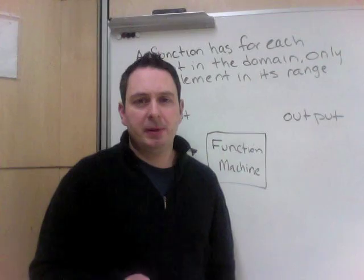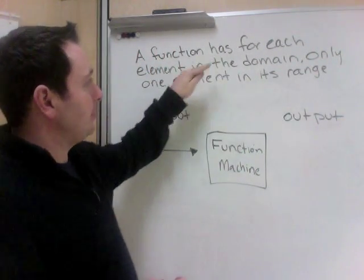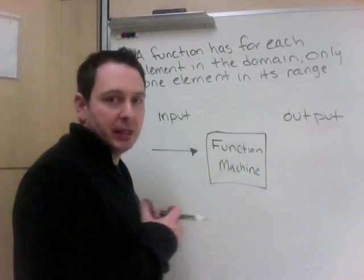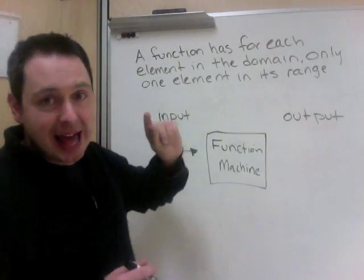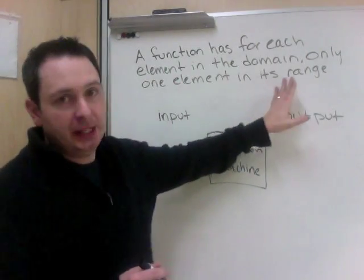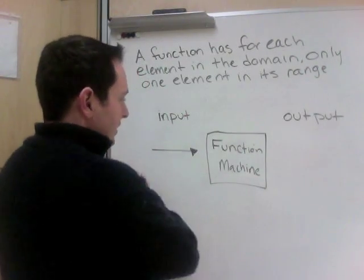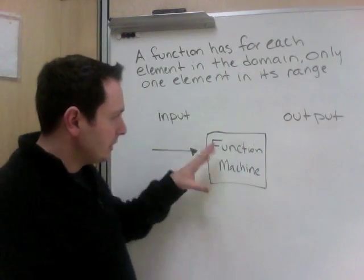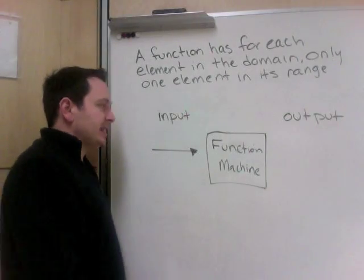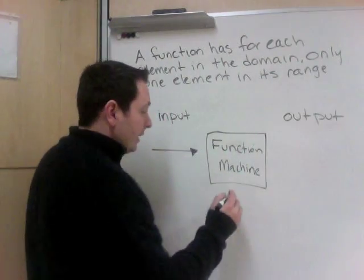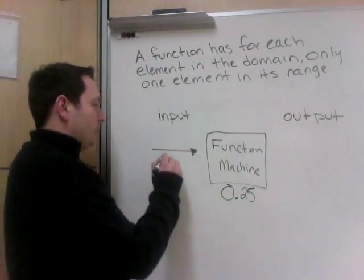A function has, for each element in the domain, so the first set, what's being input, only or exactly one element in its range. Here's an example, a function machine. Think of this as a little conveyor belt. I'm going to put things in, an input, and then it's going to give me things back out. Let's say this is calculating money, 0.25 cents, a quarter.